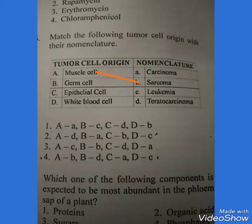On the basis of this discussion, we can solve the question which came in the 2018 CSIR NET Life Science exam. According to the solution, the correct option is number four: muscle cells correspond to sarcoma, germ cells to teratocarcinoma, and epithelial cells to carcinoma.